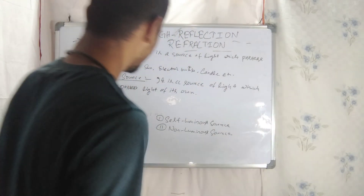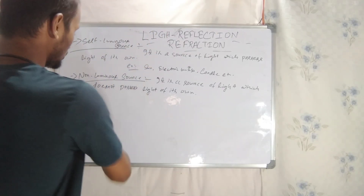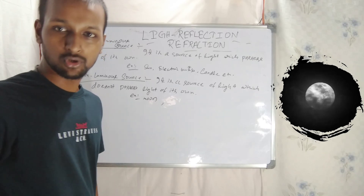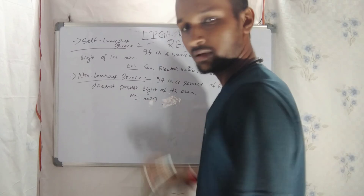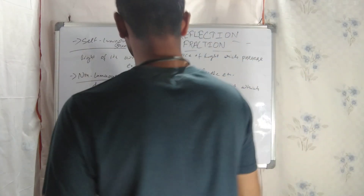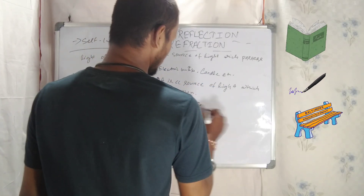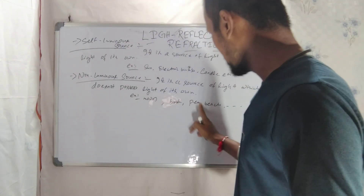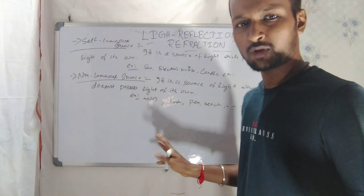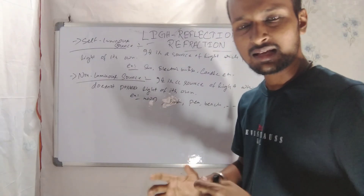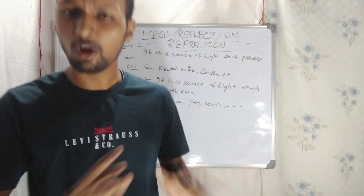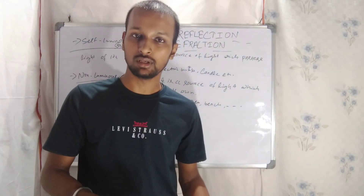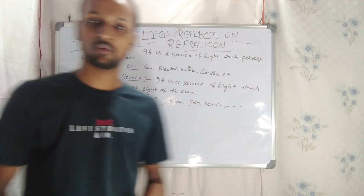Examples of non-luminous sources include the moon, book, pen, bench, and so on. These objects do not have their own light. The moon reflects light from the sun. So non-luminous means there is no light of its own. Self-luminous sources like a lamp emit their own light; non-luminous sources do not.